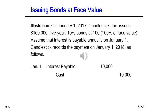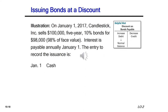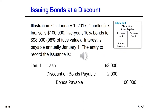The adjusting entry recorded previously now needs to be closed when the company actually pays out the amount. Assume interest is payable annually on January 1st; Candlestick records the payment on January 1st, 2018. We close the interest payable account and credit cash. The liability account — interest payable — is reduced by a debit of $10,000, and our cash asset is reduced by a credit of $10,000.